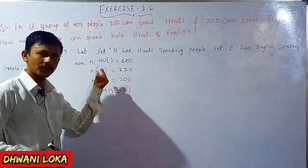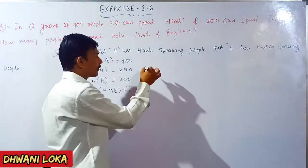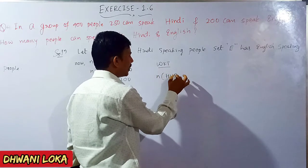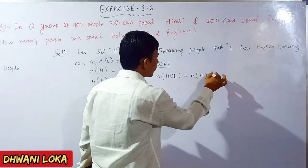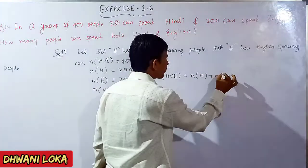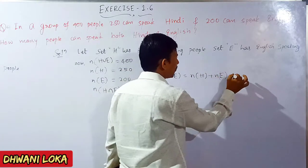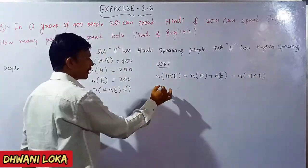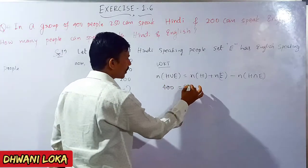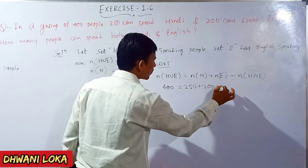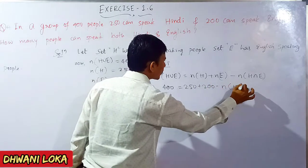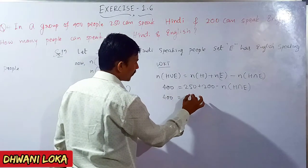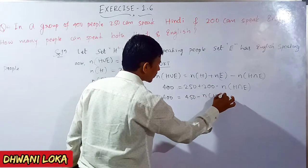N of H is equal to 250, N of E is equal to 200. The total number of people means N of H union E is equal to 400. Using the formula: N of H union E equals N of H plus N of E minus N of H intersection E. So 400 is equal to 250 plus 200 minus N of H intersection E. That gives 400 equals 450 minus N of H intersection E.